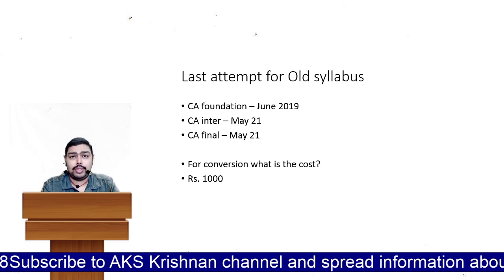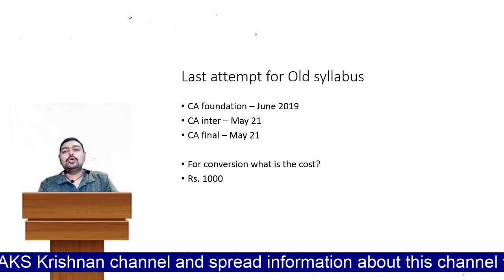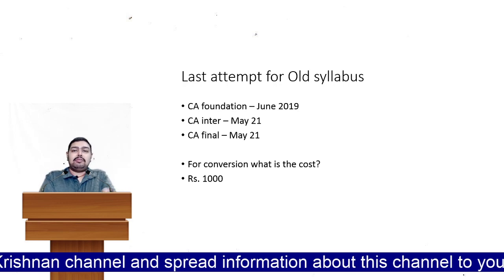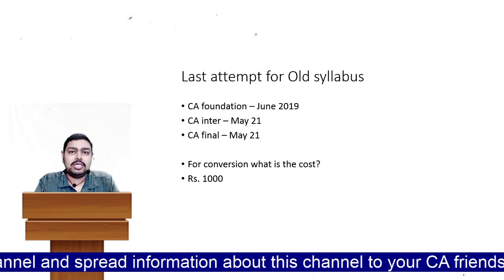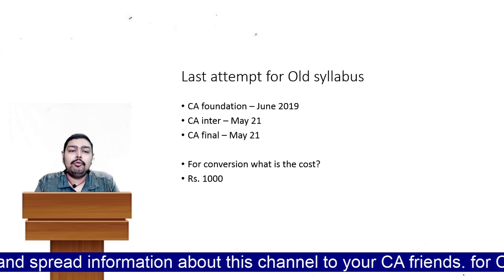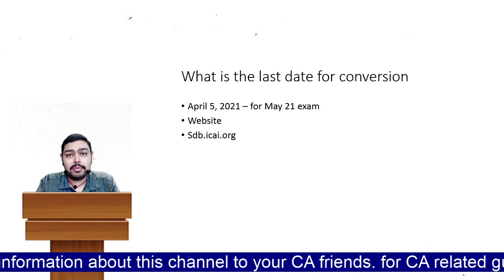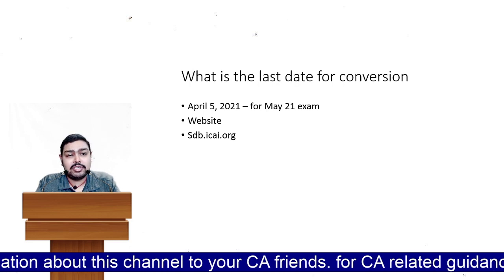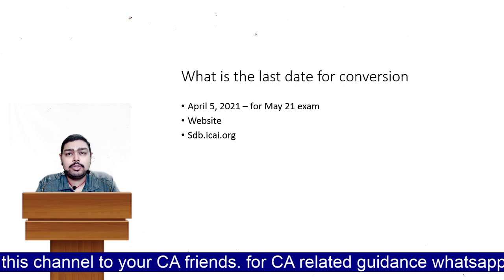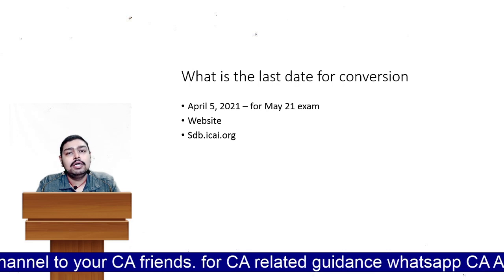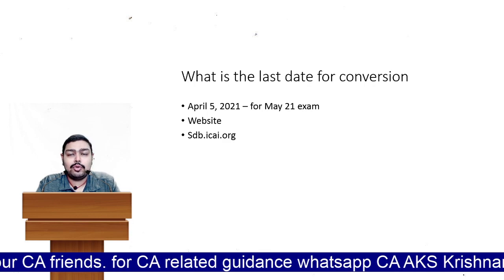Coming to CA Inter: what is the last chance for the old syllabus? It is May 2021. For CA Final: what is the last chance for the old syllabus? Also May 2021. Do not expect any further extension from ICAI. If you want to convert yourself into the new syllabus, do it now before April 5th. The conversion cost from old syllabus to new syllabus is ₹1,000. The last date for registration for conversion is April 5, 2021. The website is shown on the screen.